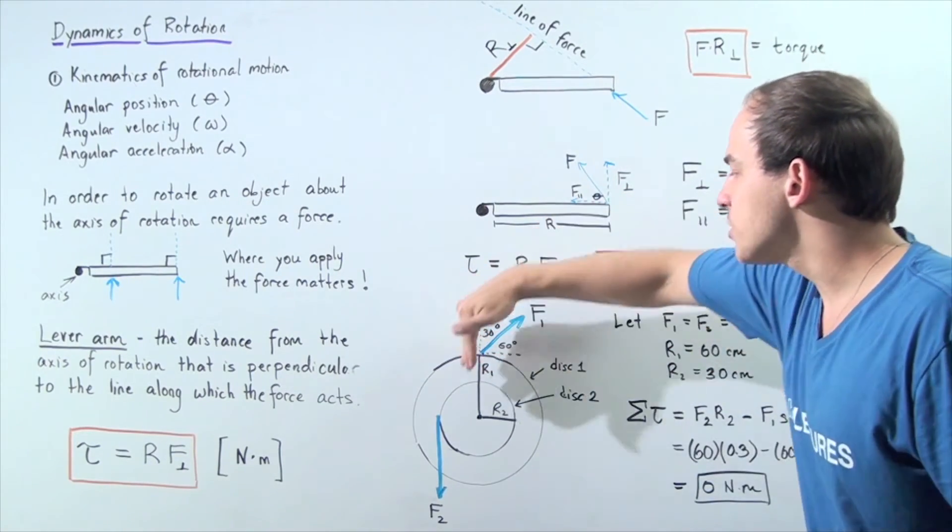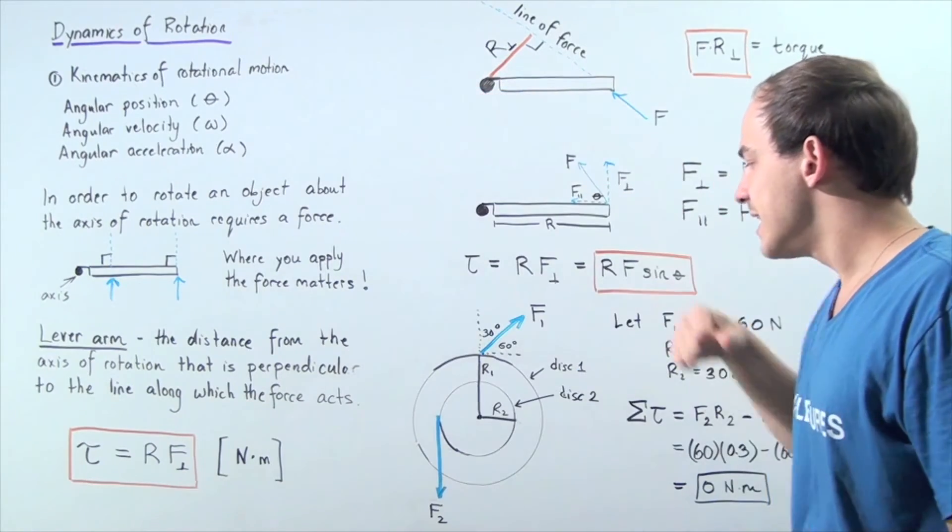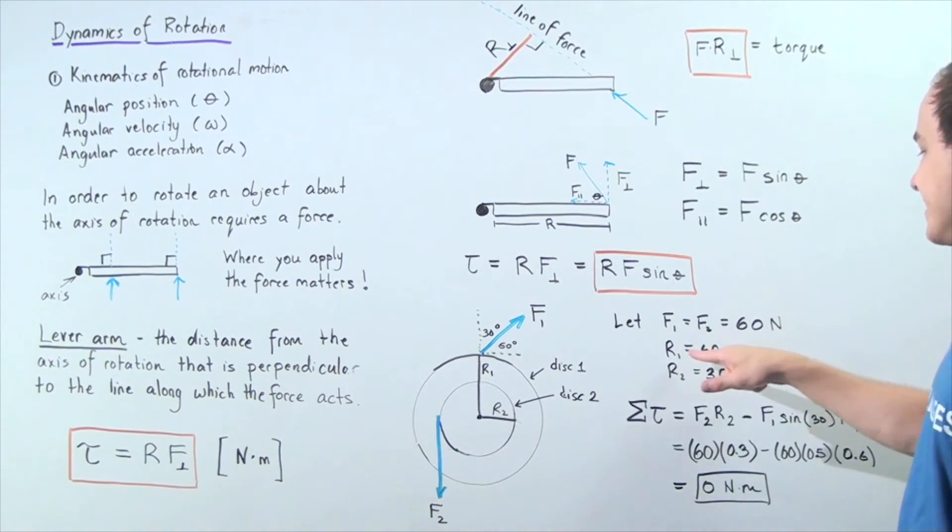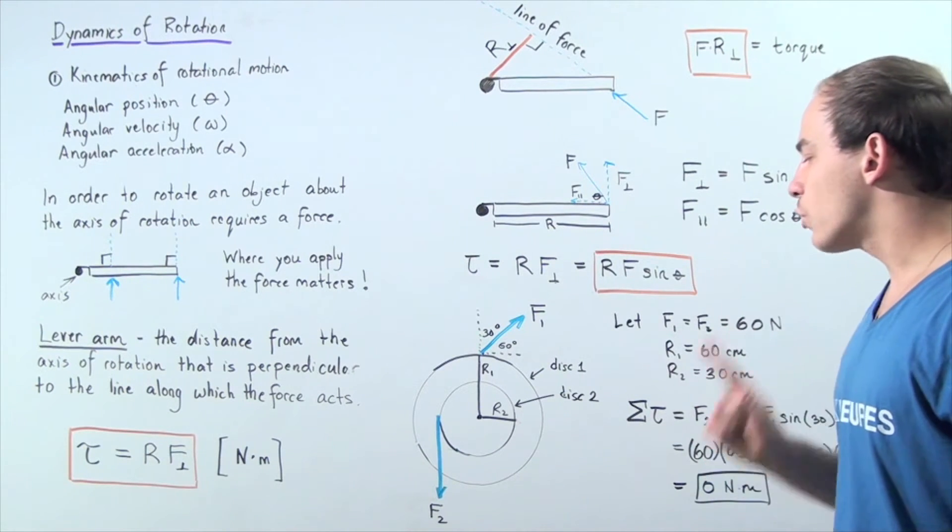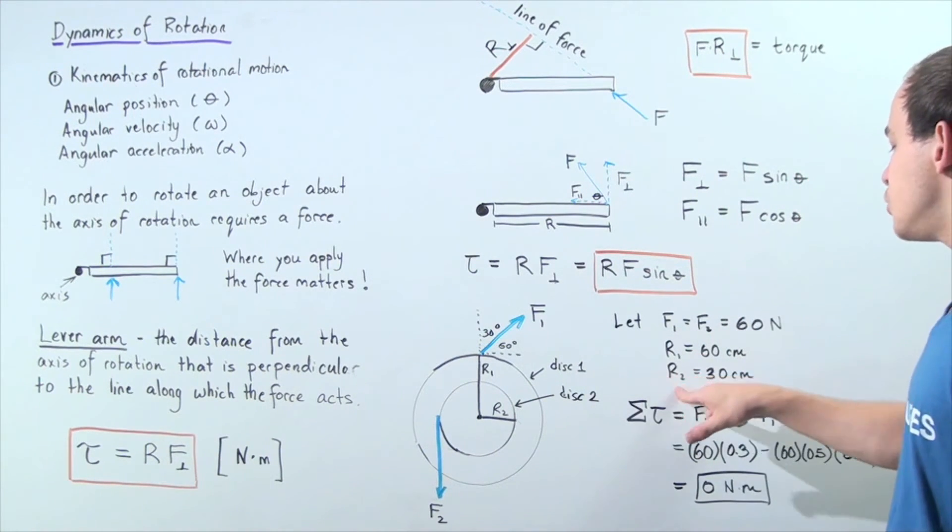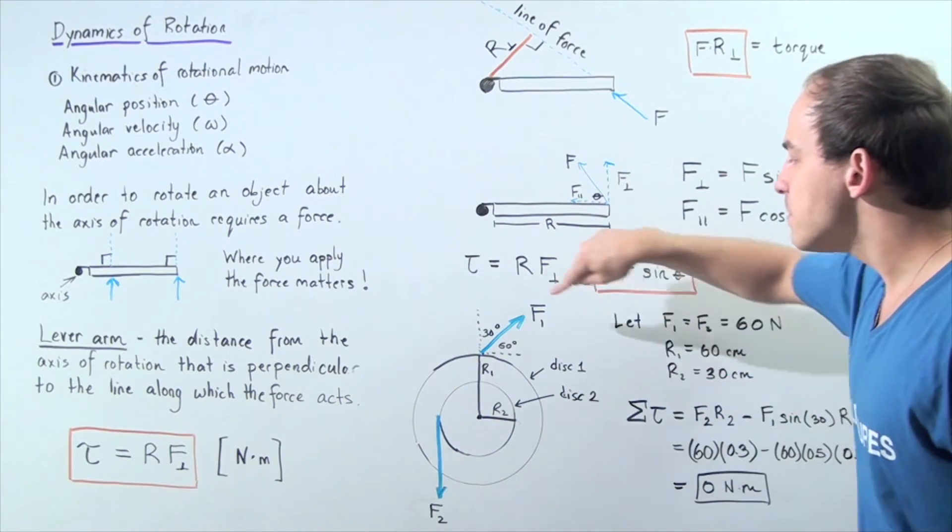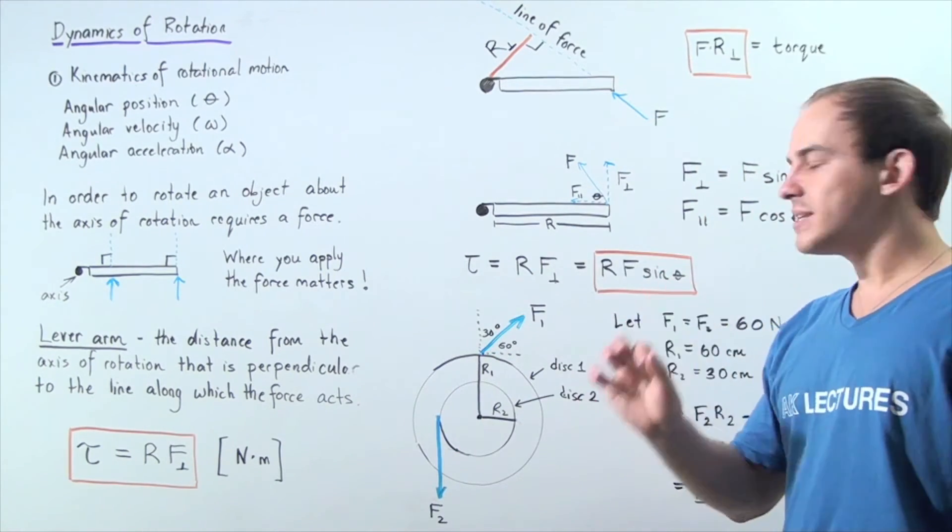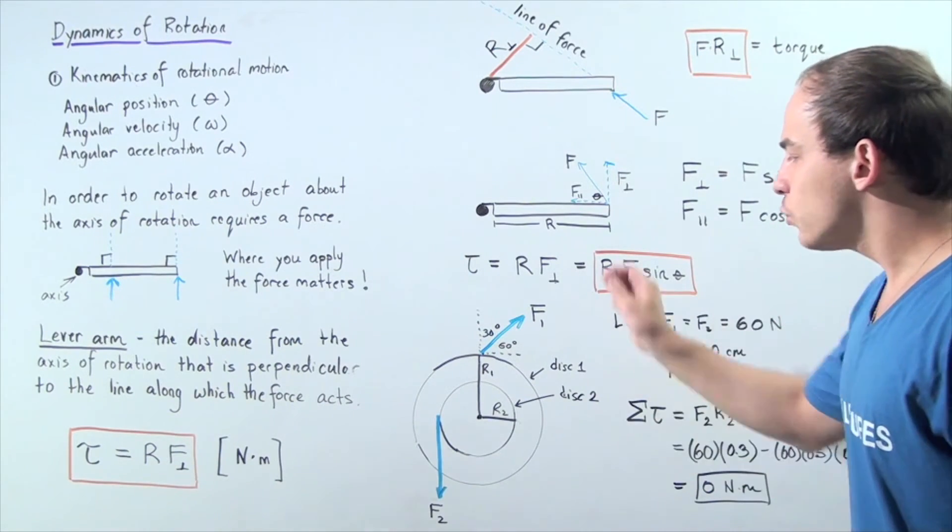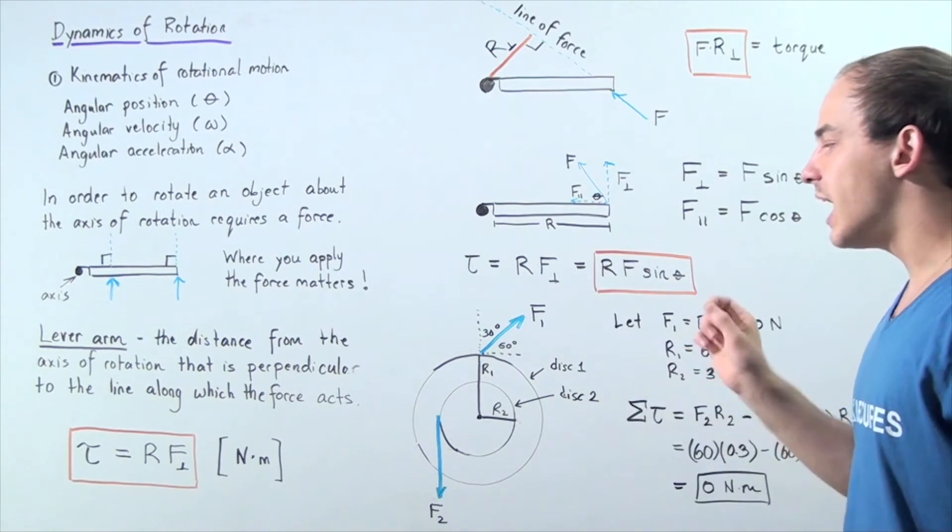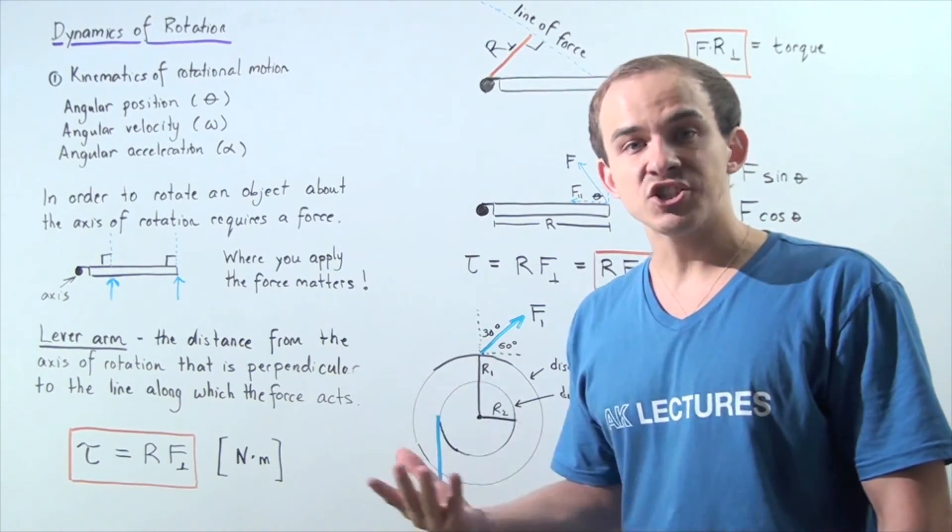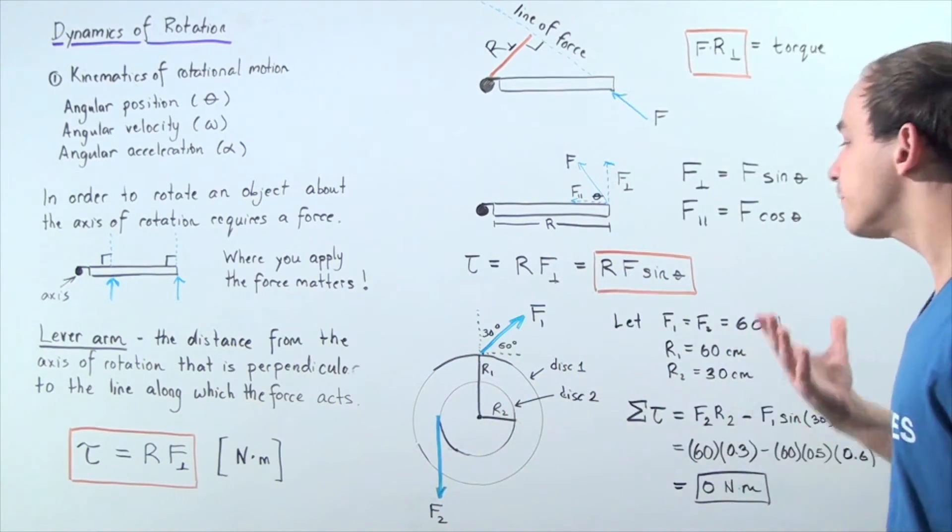So notice this force makes an angle of 60 degrees with respect to the x-axis and 30 degrees with respect to the y-axis. Now the radius of the larger disc, R1, is 60 centimeters, and the radius of the smaller disc, R2, is 30 centimeters. Both forces have the same exact magnitude of 60 newtons. So because we have two torques acting on the object, to find the sum of the torques, to find the net torque, I have to take the difference.